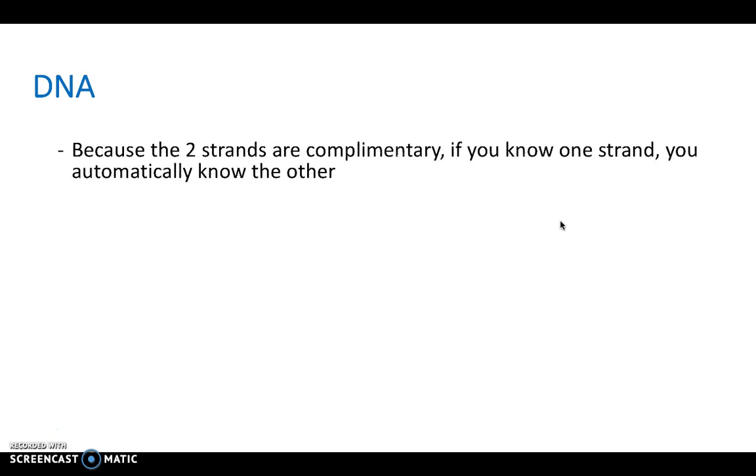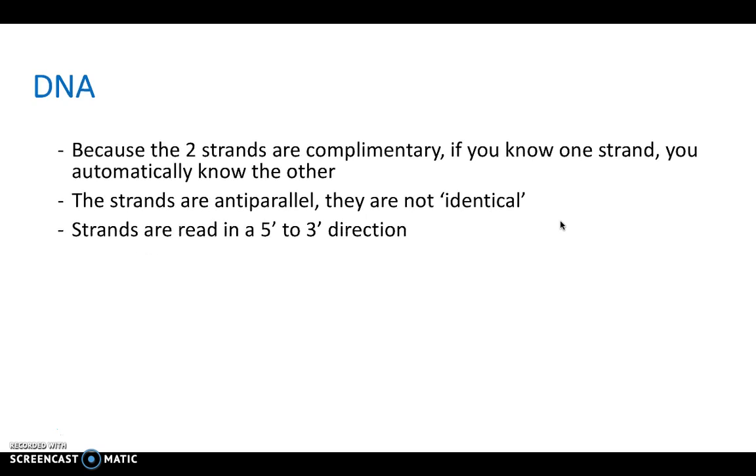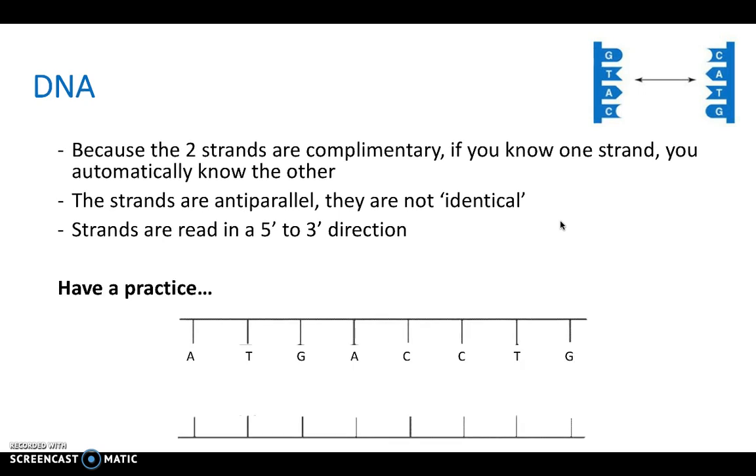So because the two strands are complementary, if you know one strand, you automatically know the other. And the strands are anti-parallel, which means they're not identical. And we read strands in a 5 to 3 direction. And although this may seem a little confusing, all it means is we read it in a specific order. So A pairs up with T, T with A, G with C, A with T, C, and so on. We read it in a particular order, a particular way, and the base pairing must be complementary along the strand.